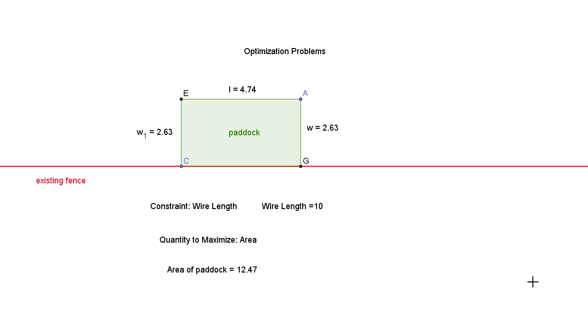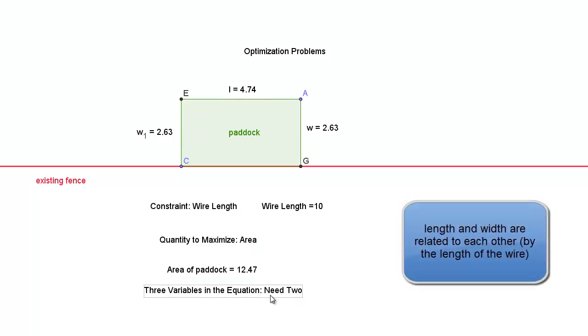Now the area of the paddock is actually given by three variables in the equation. The area is going to be equal to the length times the width, so I've got an equation area equals length times width. I have three variables in that equation and really I just need two.